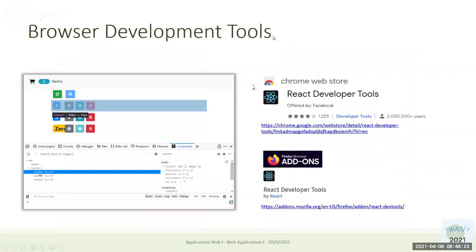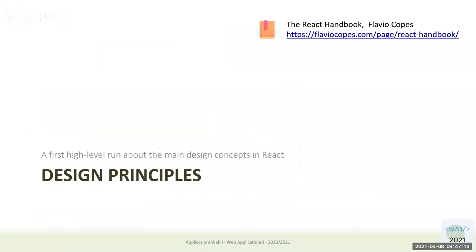Last but not least, there are some development tools. If you have a browser you can install an extension called React Developer Tools — just be aware of installing the official one from the React or Facebook team. It will extend your page inspector with two new tabs that will show you a view of the page in terms of React components instead of DOM nodes. This is something you should install into your browser.